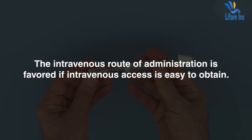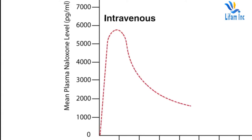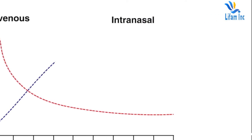The intravenous route is favored if intravenous access is easy to obtain. When naloxone is administered intravenously, the plasma level rises immediately, and the onset of action is usually apparent within two minutes. When administered intranasally, it is slower-acting but still effective. An equipotent dose achieves more than 50% of the peak plasma level within 10 minutes and achieves the peak level within 15 to 30 minutes.